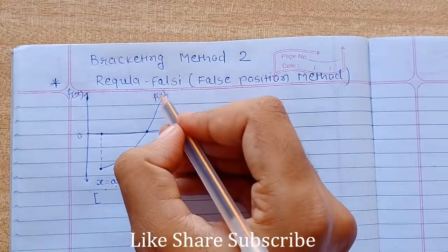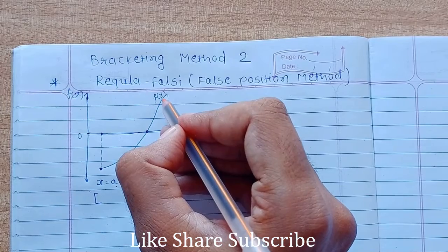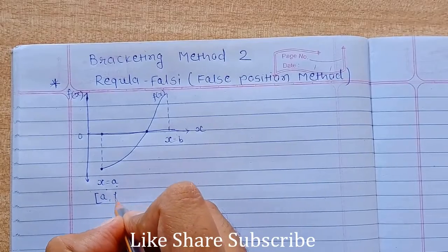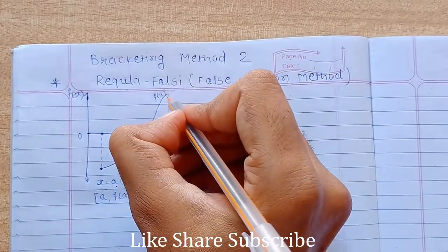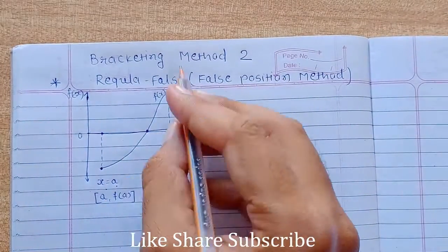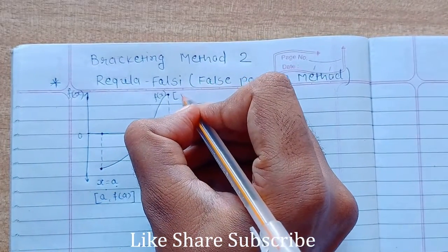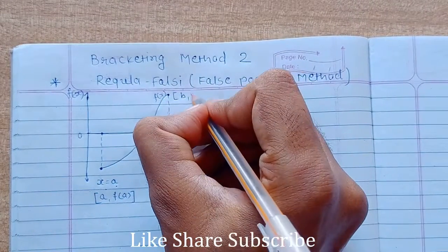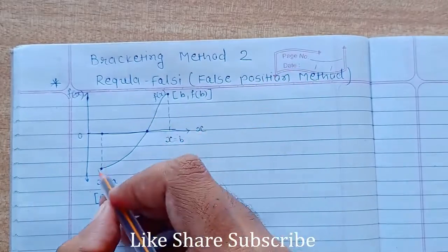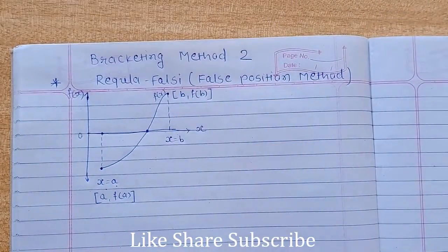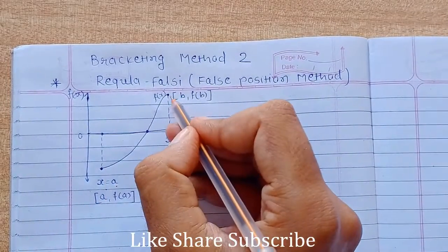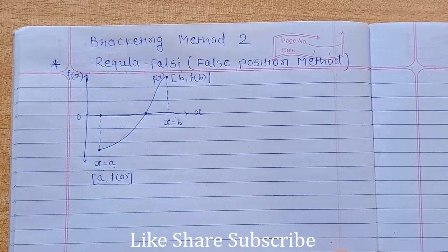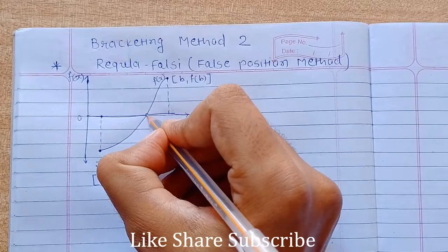putting this value x equals a into this function, so that is f of a. So the coordinate of this point is given by a, f of a. In a similar way, coordinate of b: its x-coordinate is x equals b and its y-coordinate is when you put b into this function, it will become f of b. So these are the coordinates of these two points. And this is our real root.